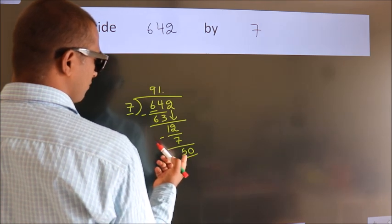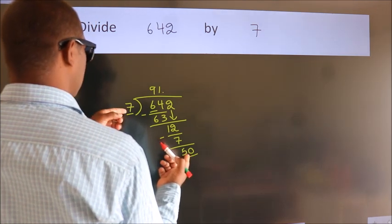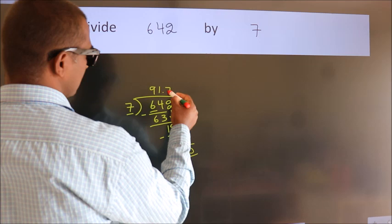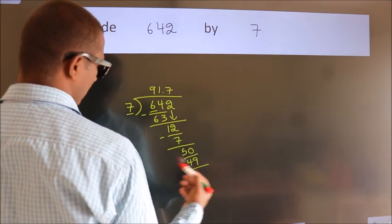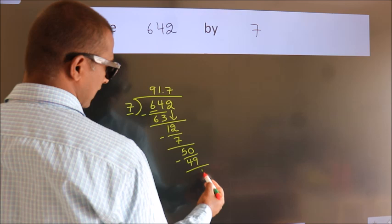A number close to 50 in the 7 times table is 7×7, which is 49. Now we subtract. We get 1.